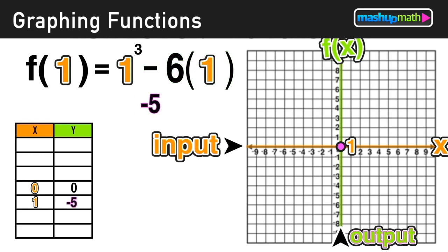So now we can say when we input positive 1, our output is -5, and that point (1, -5) is another point that is on the graph of this function.